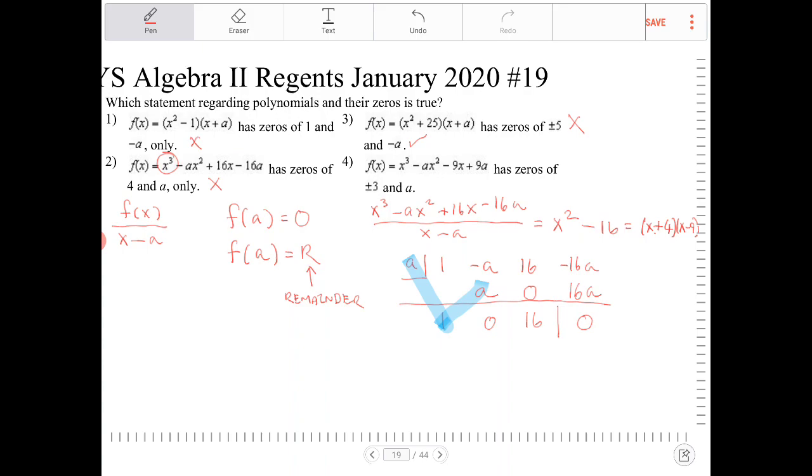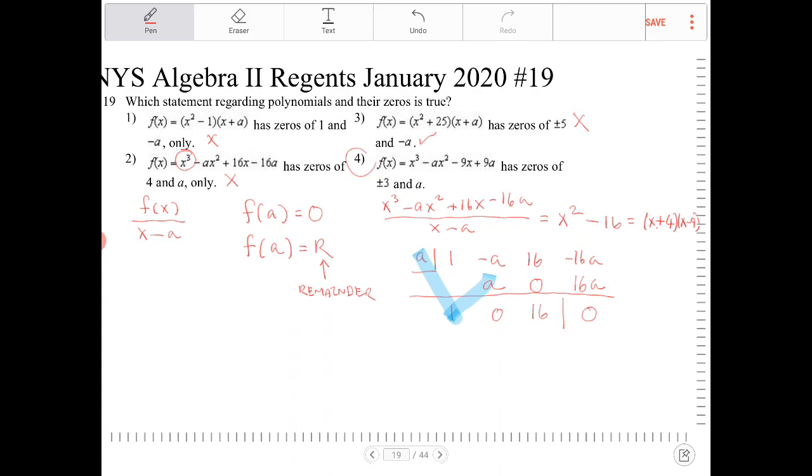So the only one that actually works is 4. And let's just do a quick verification. So again, I'm going to take a and I'm going to do synthetic division. I have 1 and then I have negative a and negative 9. And the last number is 9a. So again, synthetic division. So I get 1a, 0, 0, negative 9, negative 9a. Last number there, 0.